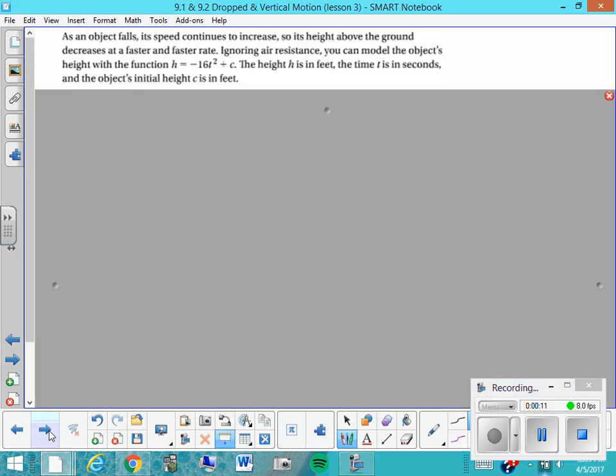So as an object falls, its speed continues to increase and increase. So its height above ground decreases at a faster and faster rate. If we ignore air resistance, you can model the object's height with a quadratic function h equals negative 16t squared plus c, where the height h is in feet and the time t is in seconds, and the object's initial height is c.